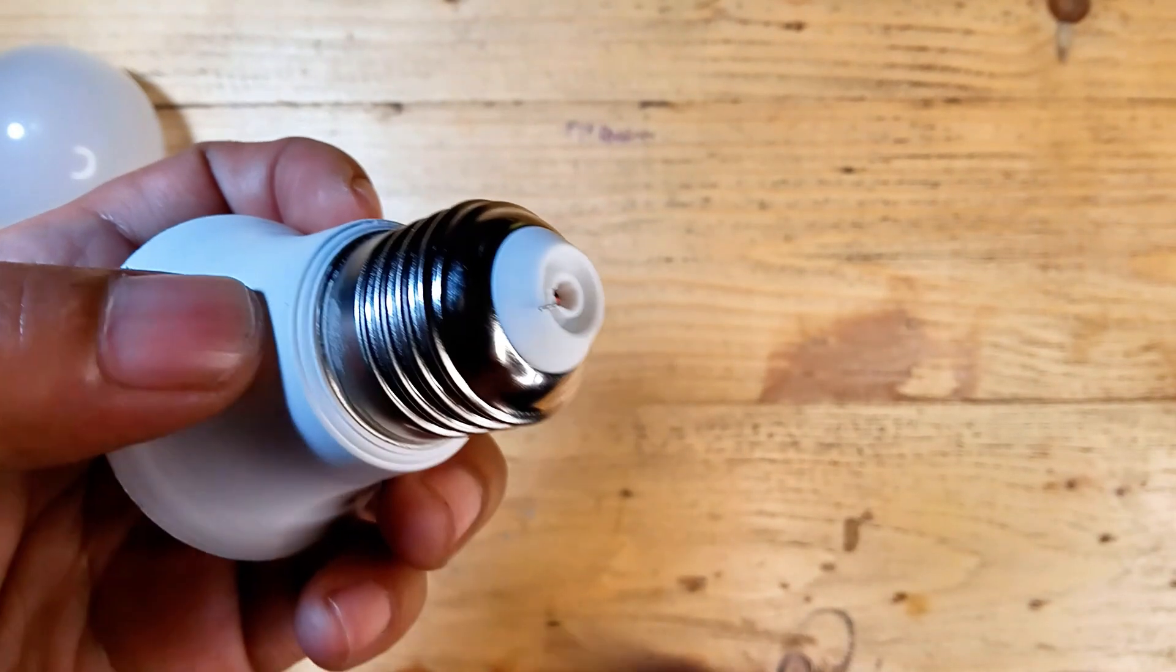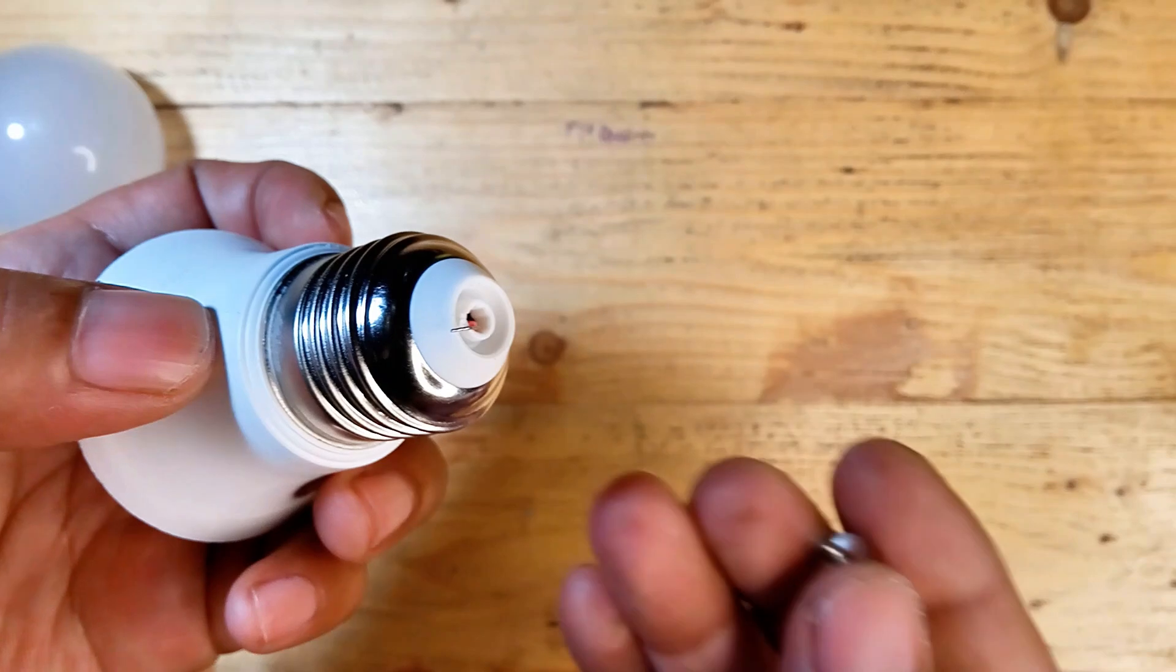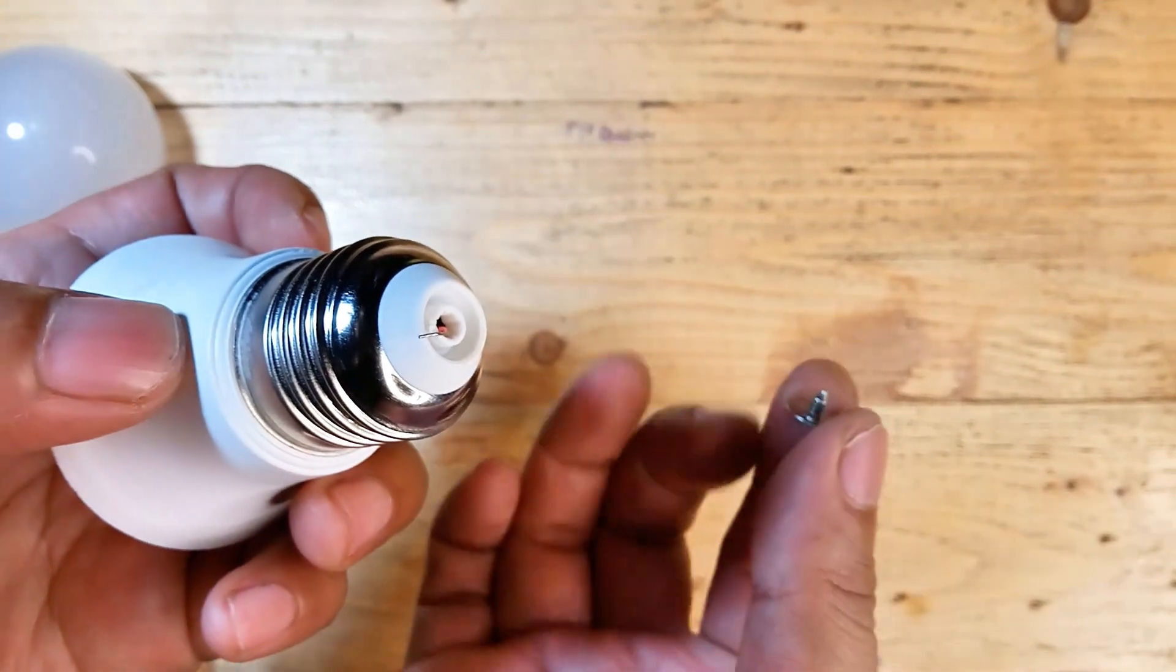Next, connect it to the bulb base. The base has pins that make it easy. Just align the wire and press it into place.